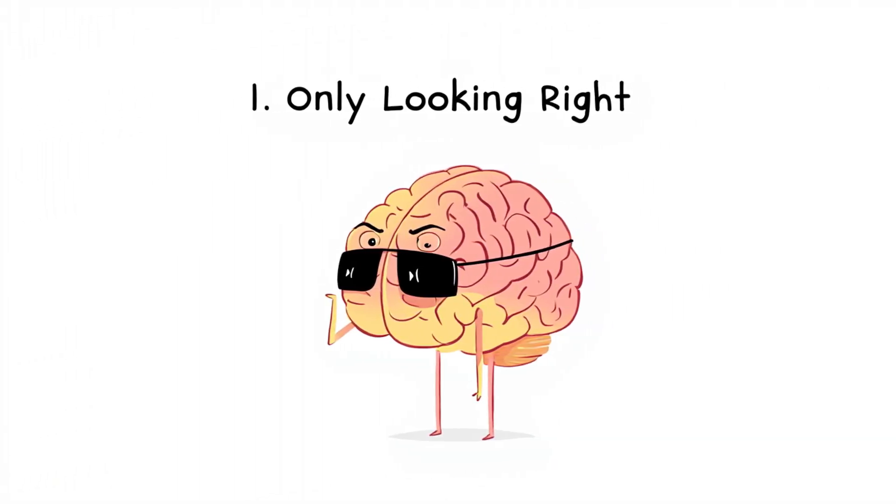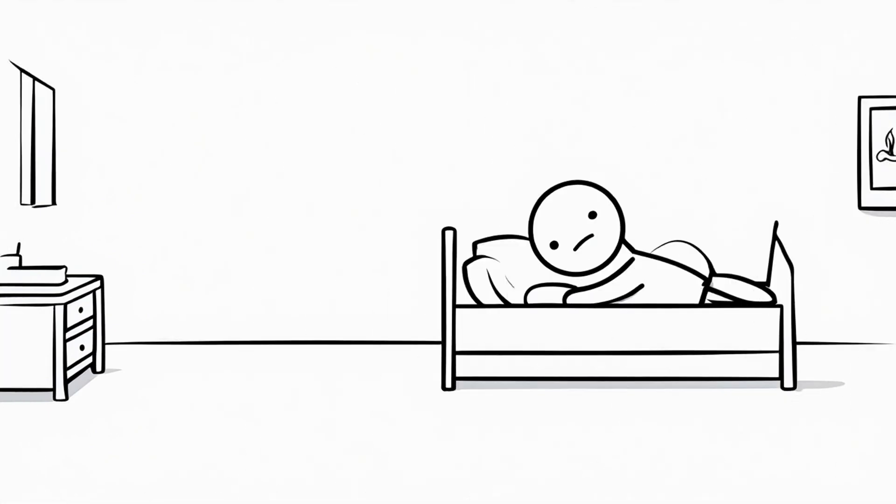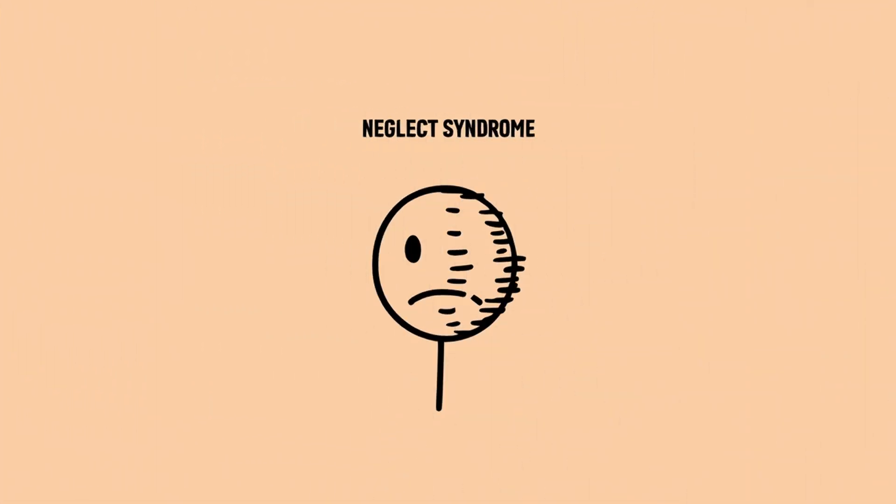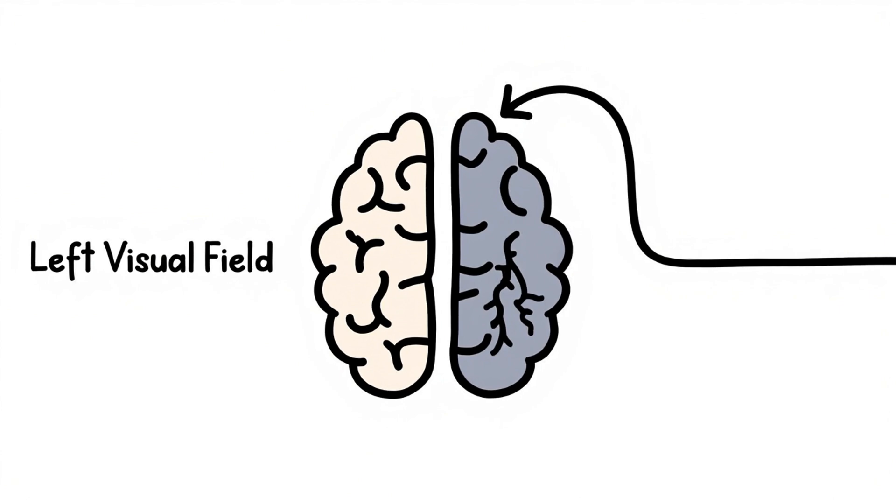Number 1. When your brain decides, I'm only looking right. Thanks. Imagine waking up one morning, and half the world has vanished. Not because it actually disappeared, but because your brain decided it just doesn't exist anymore. Welcome to one of neuroscience's weirdest plot twists. Neglect syndrome. When a specific part of your right hemisphere is damaged, often after a stroke, your brain can suddenly stop paying attention to everything on the left. And I mean everything.